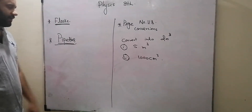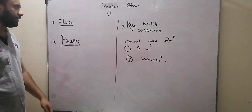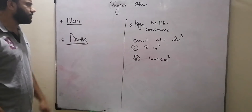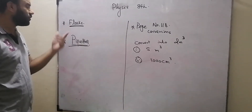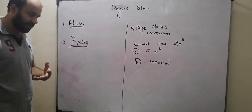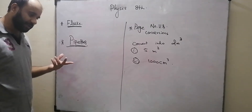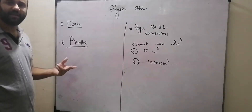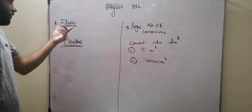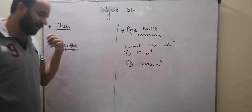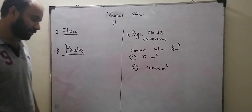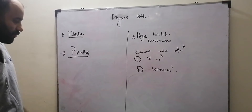Today's topic is called Flasks and Pipettes. These are two objects mostly found in a chemistry lab. Flasks come in different sizes for different volumes, like 50ml, 100ml, and 200ml.